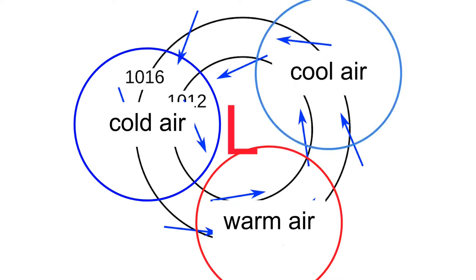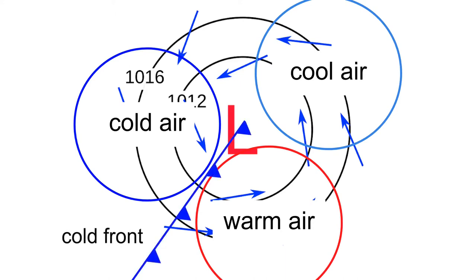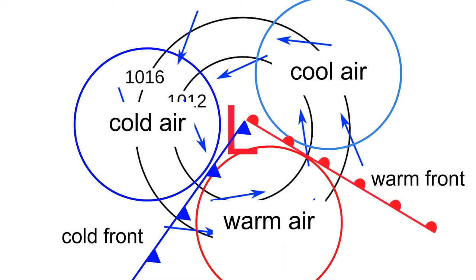There are two boundaries between these three regions of air. First, between the cold and the warm air, this is called a cold front. On the weather map, a cold front is indicated by a line with blue triangles, and the triangles point in the direction in which the cold front moves. Then there is a boundary between cool and warm air, and this is called a warm front. A warm front on the weather map is indicated by a red line with red semicircles.